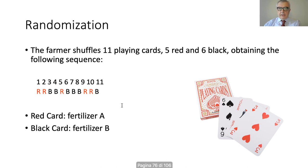Randomization can be done by playing cards. You take eleven playing cards — five red and six black — shuffle them, and obtain a sequence. For example: red, red, black, black, black, black, black, red, red, black. You associate a color to each of the eleven positions, deciding that a red card stands for fertilizer A and a black card stands for fertilizer B.